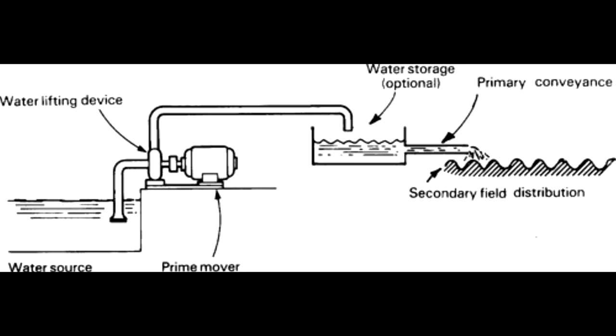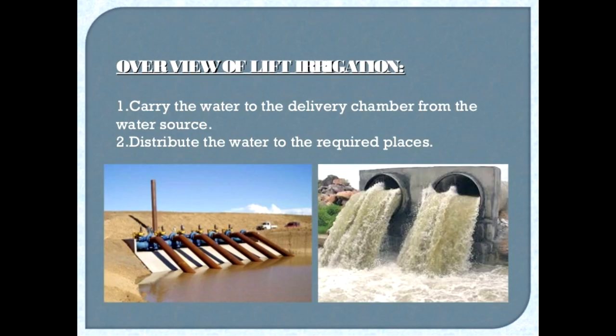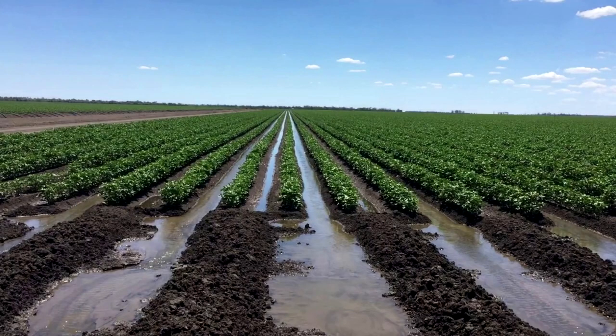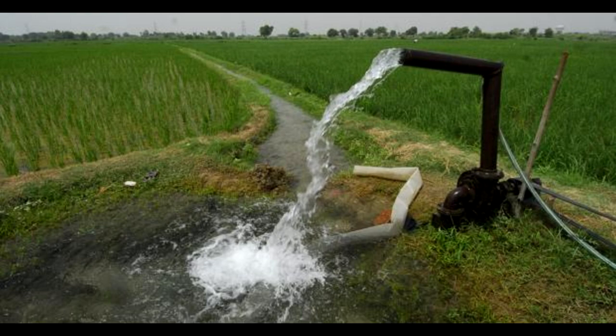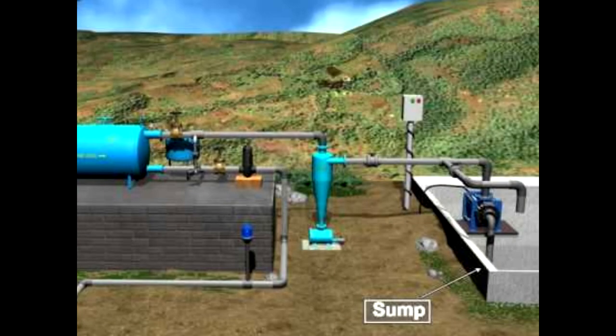Simply said, pumps are used to move the water. There are two steps in lift irrigation. The first step and second step both involve using pumps to move the water. The lift irrigation process is used to pump water from a source.